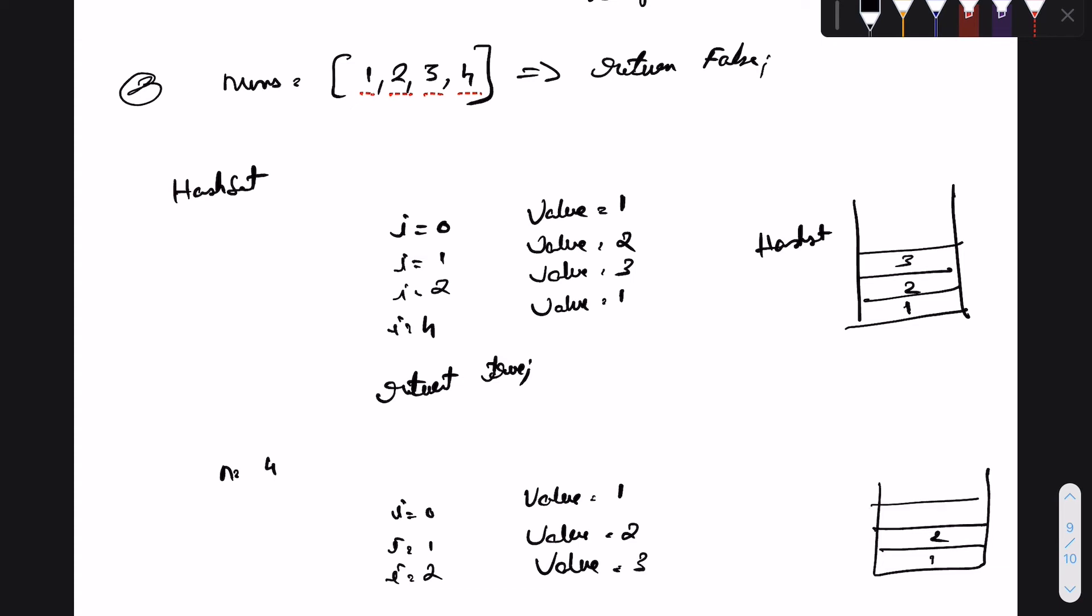Since there is no value in the hash set of value 3, we add it. We reach the final index of the array, which is i equal to 3, and the value here would be 4. We would be adding it to the hash set as well since 4 is not part of the hash set. In this case, the check inside the hash set would always return false, and the loop eventually would exit.